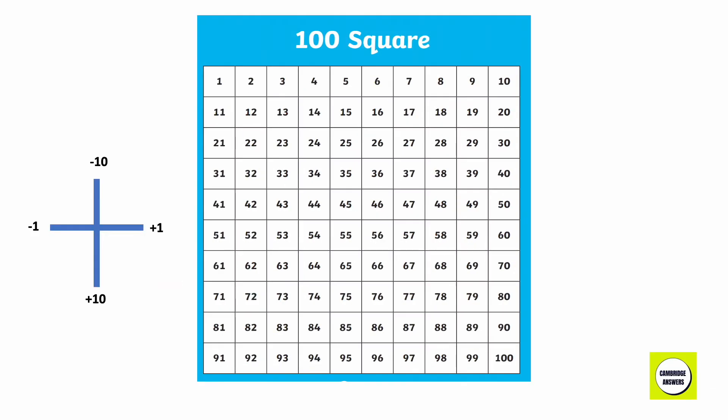A hundred square has numbers from 1 to 100. To move up, we subtract 10. To move down, we add 10. To move forward, we add 1. And when we want to move back, we subtract 1.